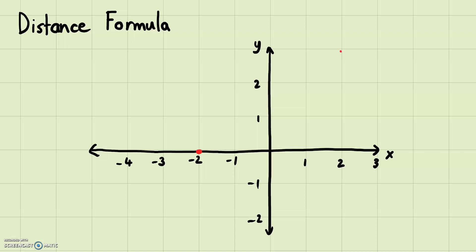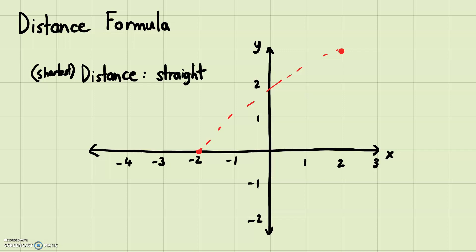But if you get something like this — two diagonal points — how do you find the distance between them? This is a little bit harder because you can't really estimate by counting. We're talking about the shortest distance, and the shortest distance is a straight line. You could go four times this way and then three times up to get to that point, but that is not the shortest distance.